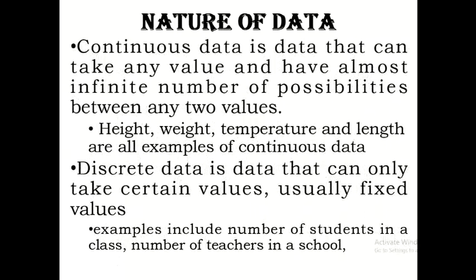Continuous data can take any value — it has an almost infinite number of possibilities between any two values. For example, if my height is 1.5 meters and yours is 1.6 meters, in between these two there are almost infinite possibilities: someone can be 1.51, 1.52, or 1.511 meters, depending on degree of accuracy. Similarly, age can be 10 years, 10 years 3 months 5 days, or even 10 years 3 months 5 days 2 seconds — there are infinite possibilities.